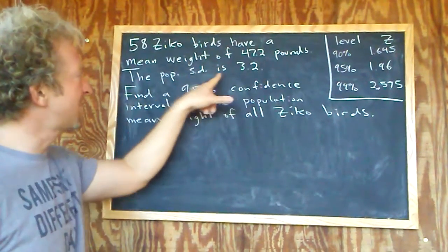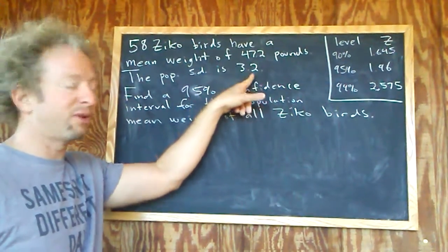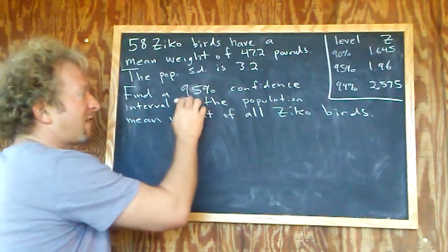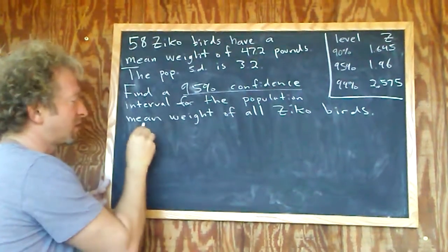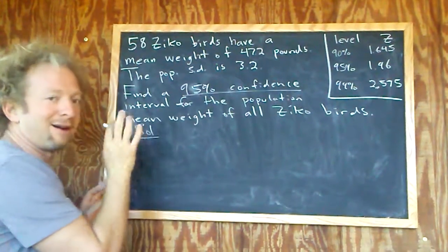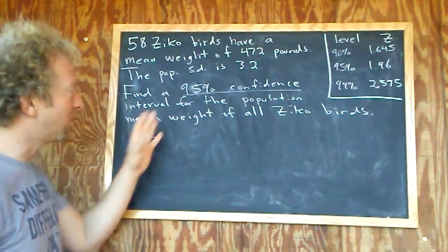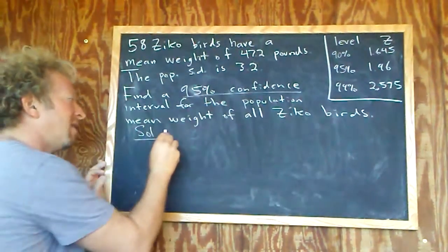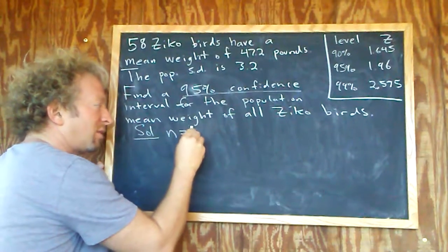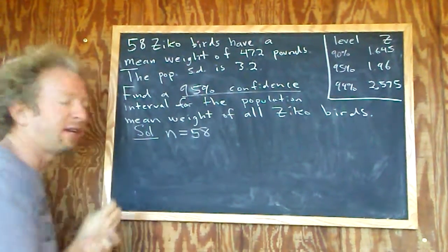We're told the population standard deviation is 3.2. The question is to find a 95% confidence interval for the population mean weight of all the Zika birds. Let's find the variables here. We have 58 Zika birds, so that's n, the sample size. The total number is always n, so n equals 58.